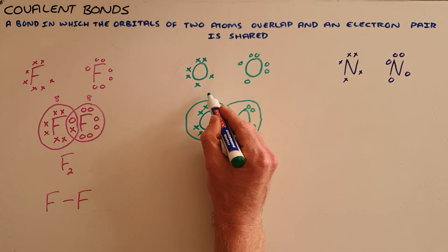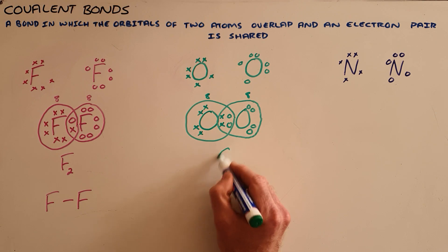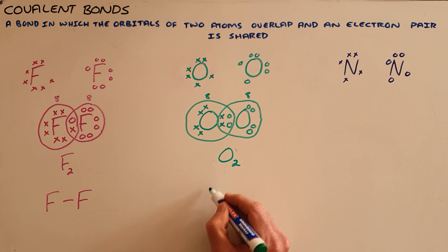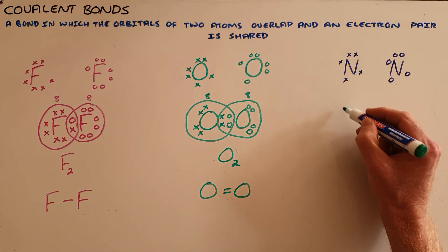Once again satisfying the octet rule, we say that oxygen is also a diatomic element and we represent that in Cooper notation by drawing a double line. And then a triple bond is also possible.